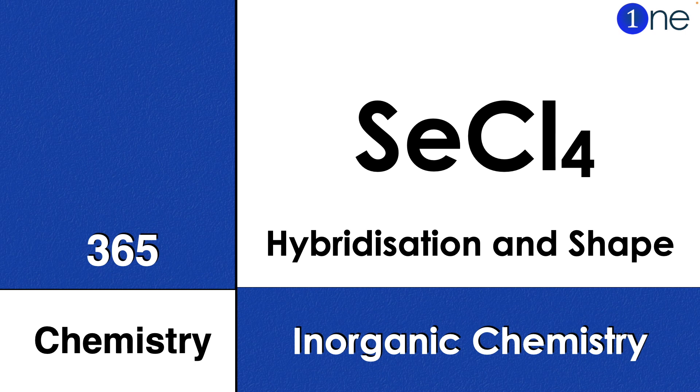Welcome to One Chemistry. This is the 365 Chemistry Series, Inorganic Chemistry questions. Here you have selenium tetrachloride SeCl₄, and you have to find the hybridization and shape of it.